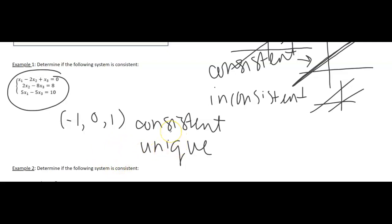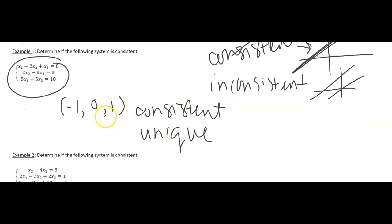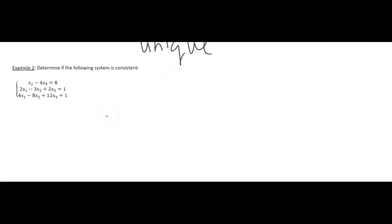So consistent means that the solution exists. Inconsistent, solution does not exist. And then if the solution exists, if it's consistent, is the solution unique? All right, let's look at another example here.